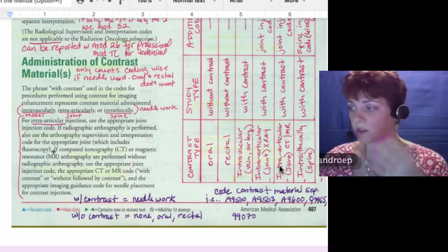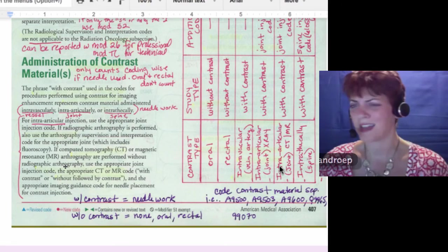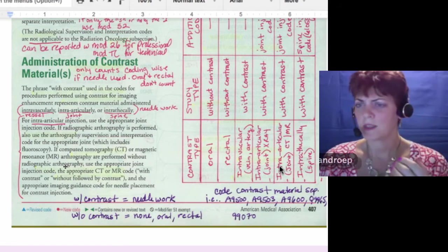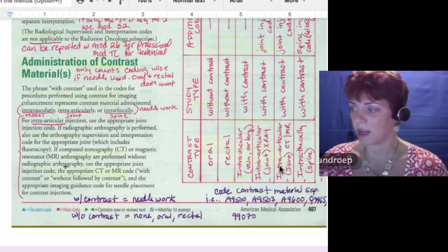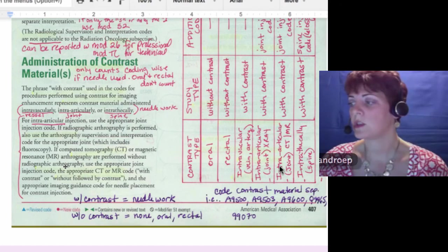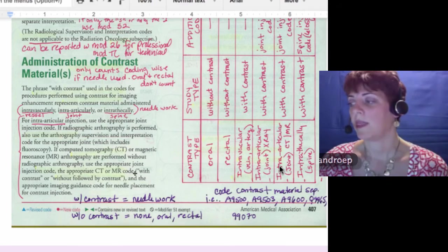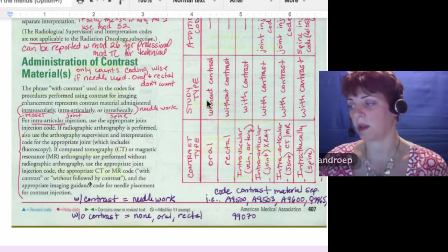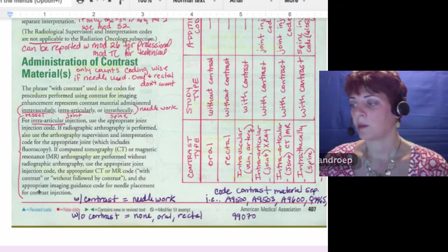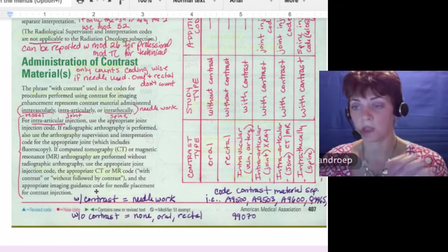I'm starting to glaze over. If CT or MR arthrography are performed without radiographic arthrography, so now they're talking about joint studies with just an x-ray or joint study with a CT or joint study with an MR, there's all those three different types. Use the appropriate joint injection code and the appropriate CT or MR code. This is the permission statement. You can use the indented with contrast or without followed by with. The appropriate imaging guidance code for needle placement. So now we get to code a code for the needlework.